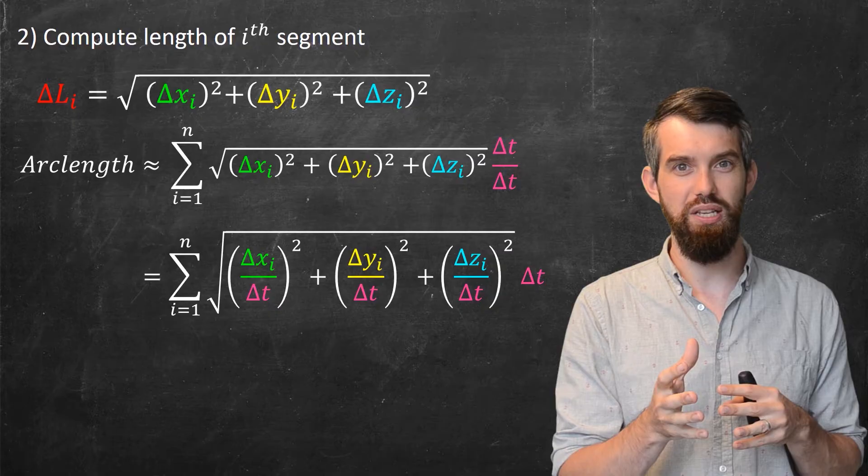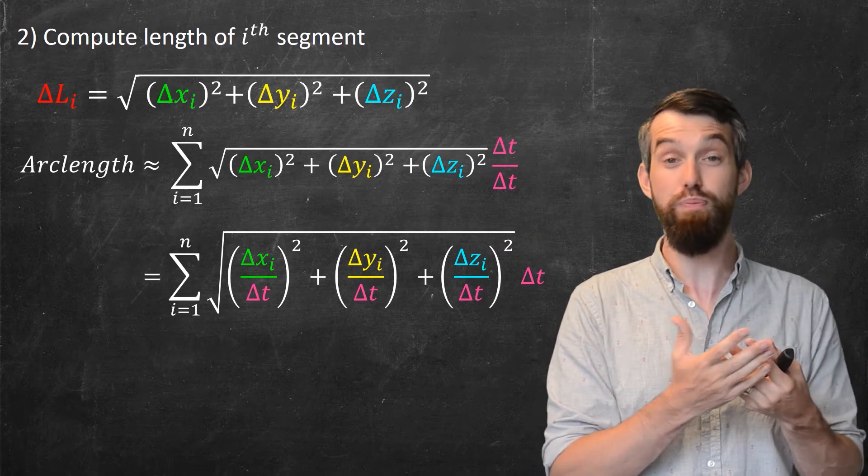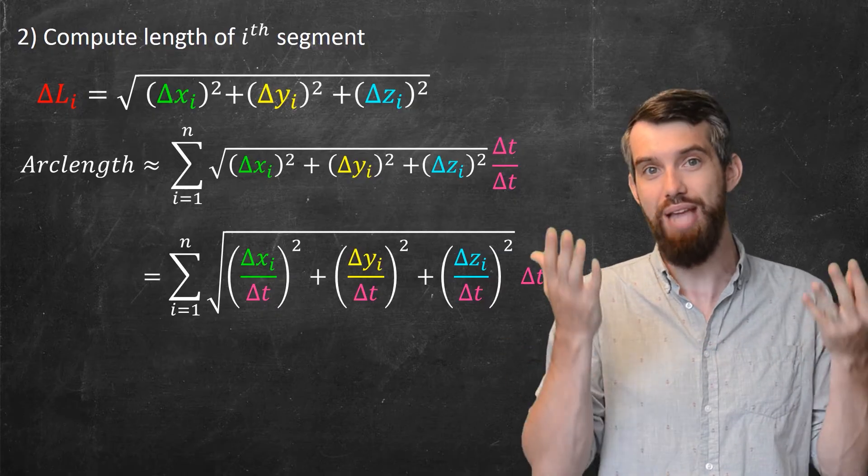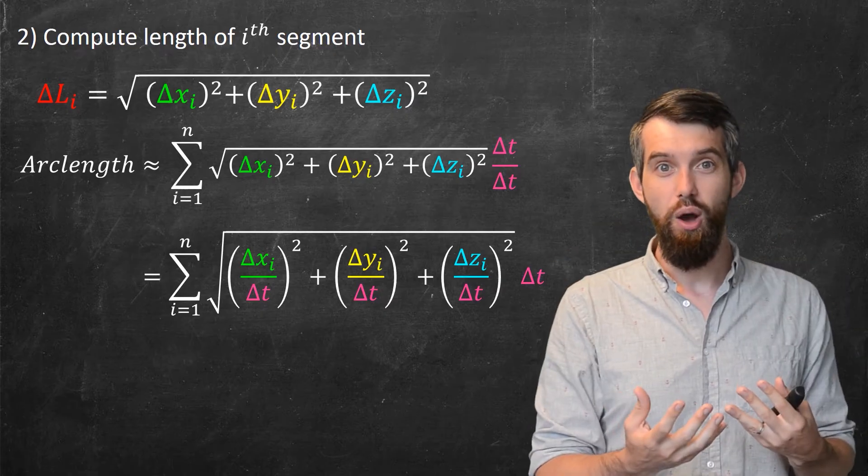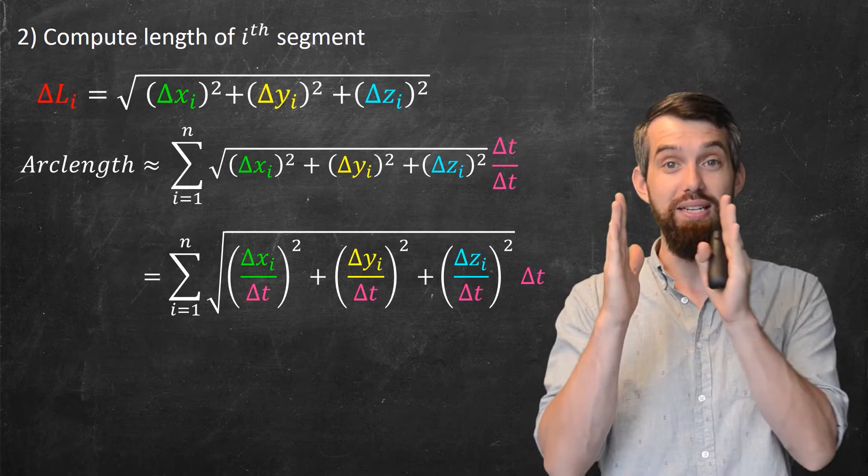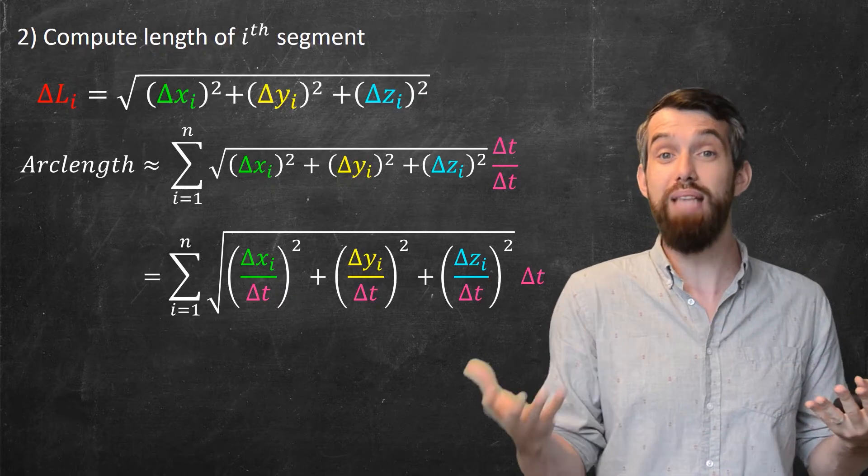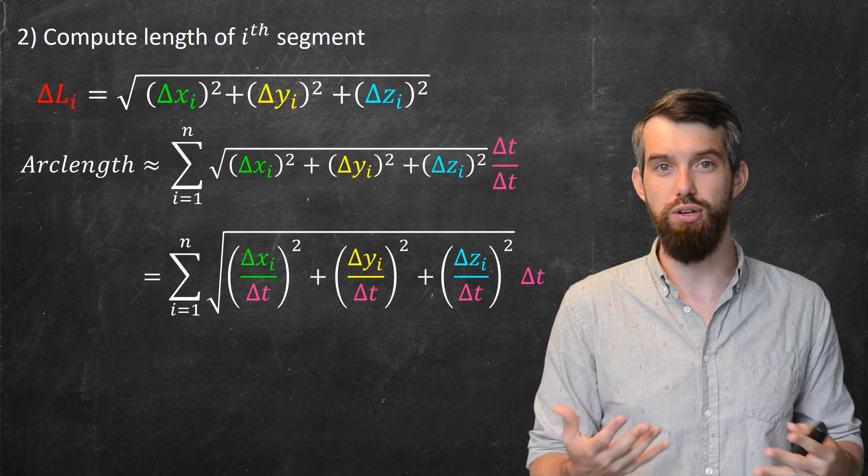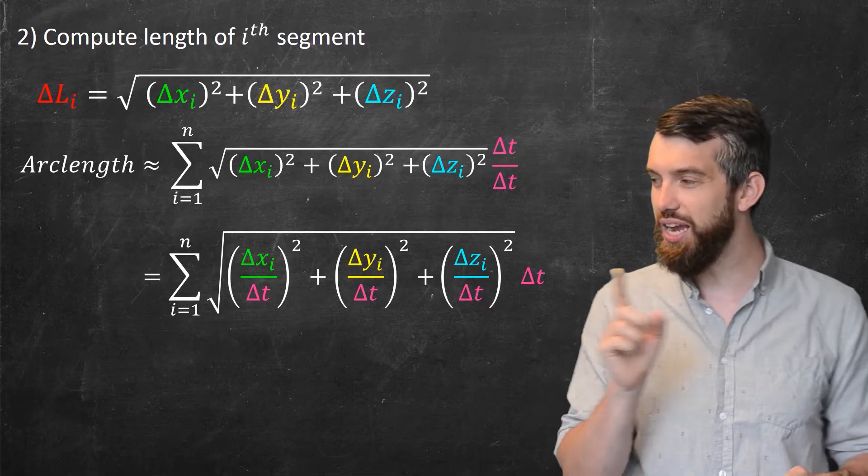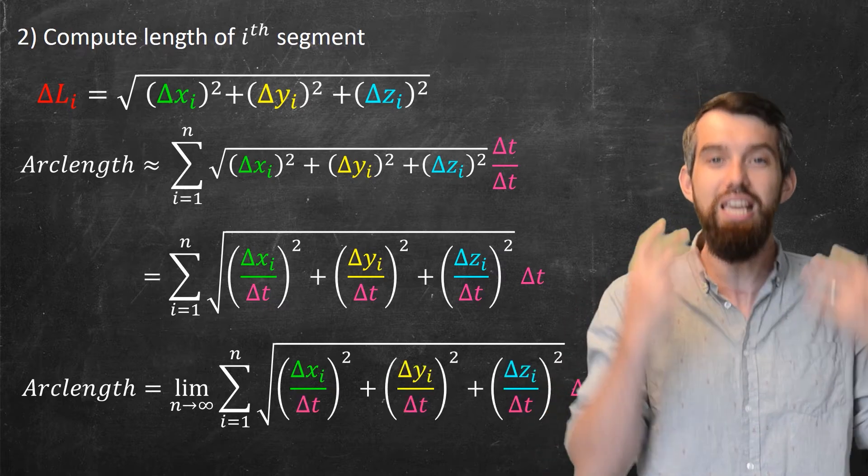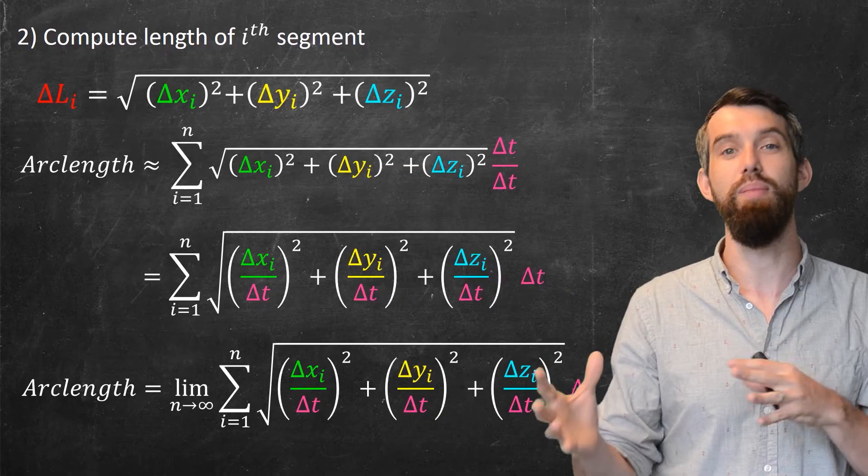Alright, so the next big move of my argument is, notice how I'm saying arc length is approximately this. Because for any n, I'm doing an approximation, I've only broken it up into n different components. But if I want to make it equal to it, if I want to come up with a definition, what I'm going to do is I'm going to take my delta t and make it smaller and smaller and smaller. Or say it differently, the number of segments is going to be larger and larger and larger. So let me replace the approximation with an equal sign and I'm going to stick a limit out the front of this. The arc length is equal to the limit as n goes to infinity of this summation that I had before.